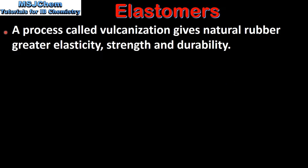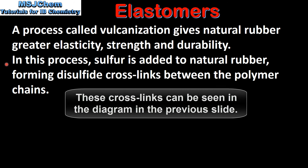A process called vulcanization gives natural rubber greater elasticity, strength and durability. In this process sulphur is added to natural rubber forming disulfide cross-links between the polymer chains.